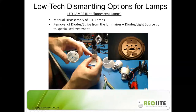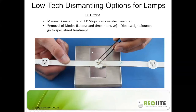For LED strips found in linear type tubes, these can also be manually disassembled. You can remove the electronics — the printed boards, wires, capacitors, and so forth. Then you can remove the diode, which is the light source — a little square. The plastic cover is taken off, and the diode on the light source is removed and goes to specialized treatment. Again, it is also labor and time intensive, so one would have to assess whether it is worth doing for small volumes in small facilities.